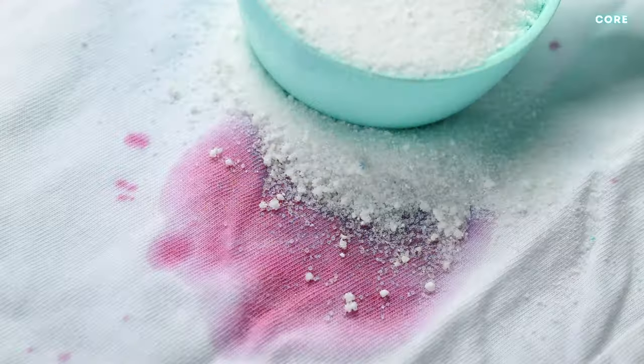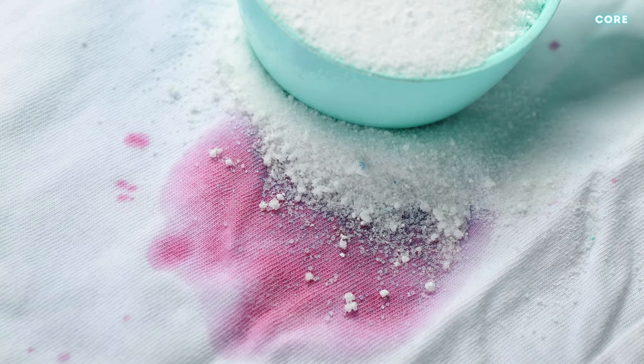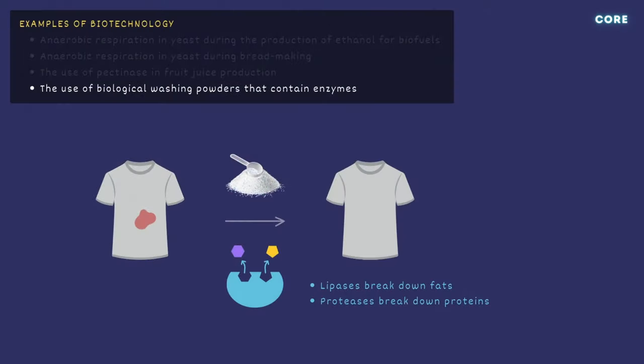Enzymes are also used in biological washing powders to remove tough stains. Lipases break down fats and oils, and proteases remove protein-based stains, like blood or egg yolk.